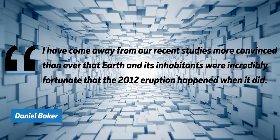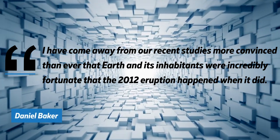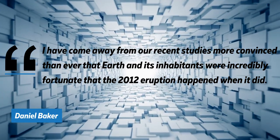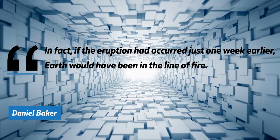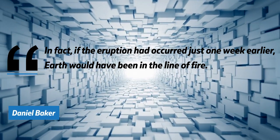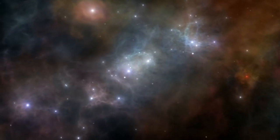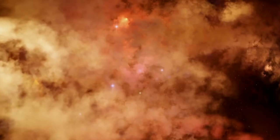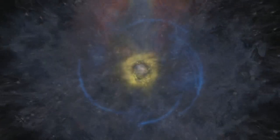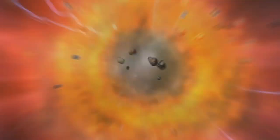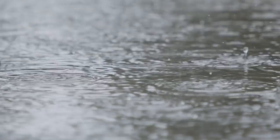And according to Daniel Baker of the University of Colorado, I have come away from our recent studies more convinced than ever that Earth and its inhabitants were incredibly fortunate that the 2012 eruption happened when it did. In fact, if the eruption had occurred just one week earlier, Earth would have been in the line of fire. Since there are billions of stars more massive than our sun, it has been observed that every day, astronomers detect around one gamma ray burst in the vast expanse of the universe. But here's the catch: they can only detect those that happen to point in our direction, which means that we're probably missing out on a lot of them. It's like trying to catch raindrops with a strainer. This makes us wonder about how GRBs are spread out in space.